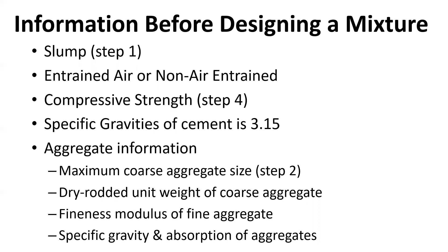You also need the specific gravities of all your powders — Portland cement, type 1L cement, slag, fly ash, water, all the different cementitious materials. And you need quite a bit of information about the aggregate, which makes up 68% of the concrete: the maximum coarse aggregate size, the dry-rodded unit weight of the coarse aggregate, the fineness modulus of the fine aggregate, and the specific gravity and absorptions of both the coarse and fine aggregate.